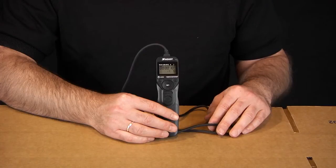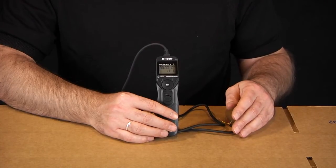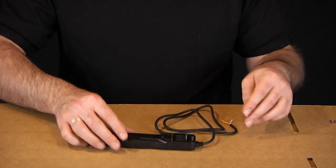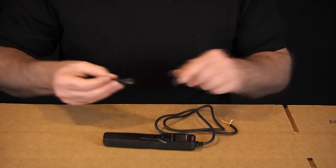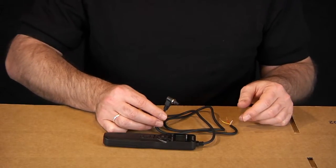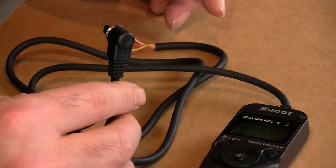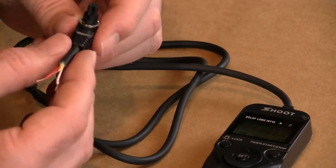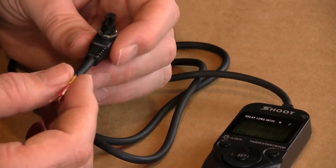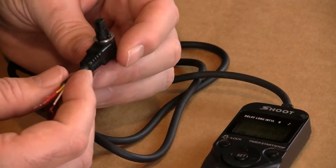I bought this cheap remote timer off of Amazon.com and I knew when I bought it that I was going to have problems with the connector. This particular model stated that it was compatible with a Canon 20D and 7D and it wasn't compatible at all. This connector, when stuck in the camera, I could jiggle it and it would fire off a bunch of shots then it would lock the camera up.